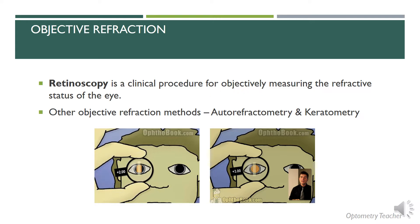There are a couple of other methods of objective refraction — autorefractometry and keratometry. Those will also give you an idea about the refractive status of the patient's eye.